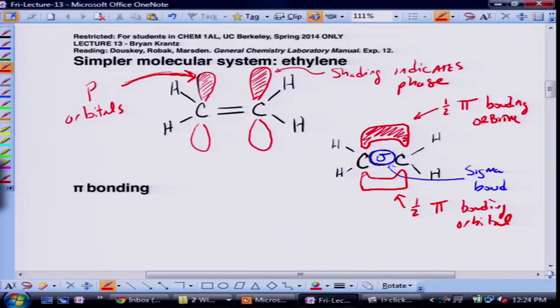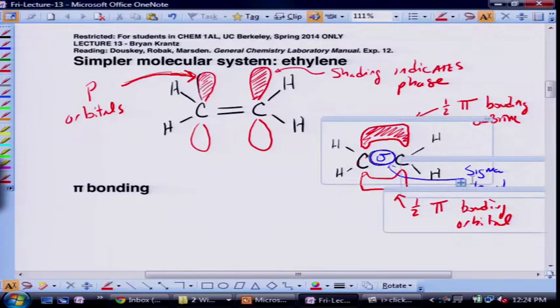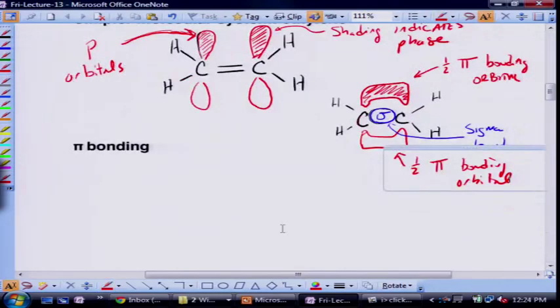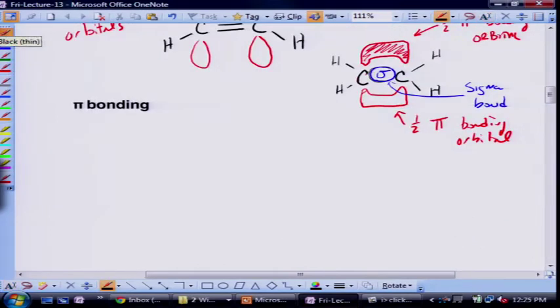And then where your p orbitals overlap constructively, they'll overlap above and below the plane, and I'll shade the top just to keep the phase similar. So this is one half of the pi bonding orbital. And this is the other half. Now this is for a double bonded molecule, but imagine if we had a CC triple bond, where would we put two more half pi bonds in there. Does anybody know where they would go? Yeah. So they go orthogonal to these, 90 degrees to these. So I can't draw that very well, but you can use your imagination. And so it'd be like in front and back of the carbon carbon sigma bond.